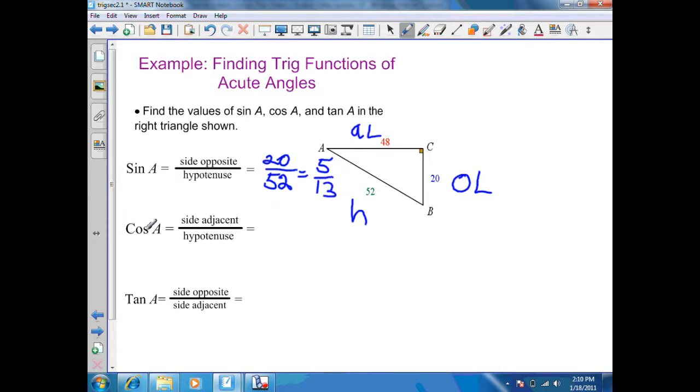Cosine of A is adjacent leg, which is 48, over hypotenuse, which is 52. When I simplify, I'm going to get 12 over 13.